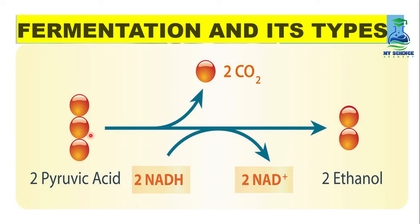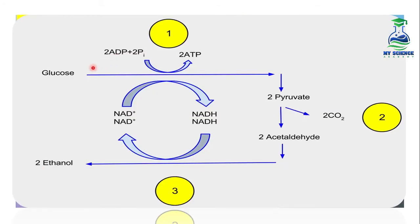Every pyruvate, when carbon dioxide is released, will be converted into ethanol. In this way, the 2 pyruvic acid molecules become 2 ethanol molecules. And 2 NADH is oxidized to 2 NAD+ by the removal of hydrogen atoms. Here, the complete process of alcoholic fermentation can be observed.